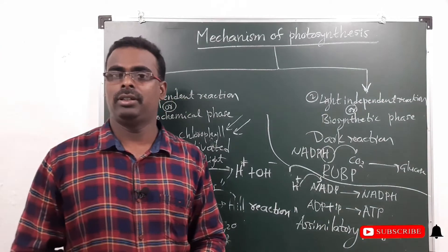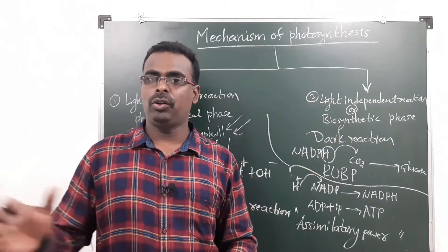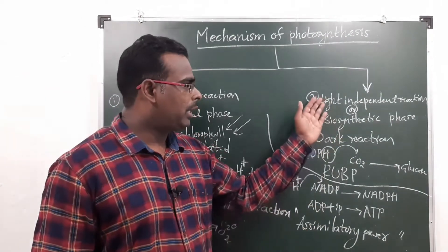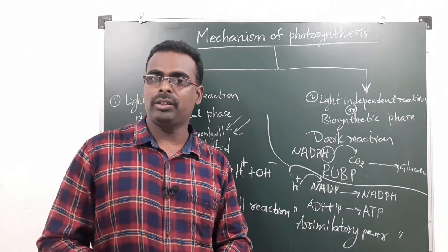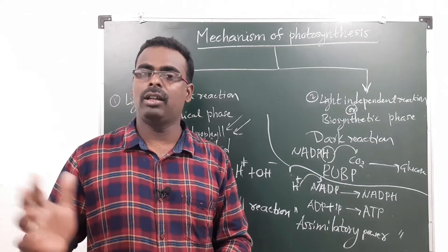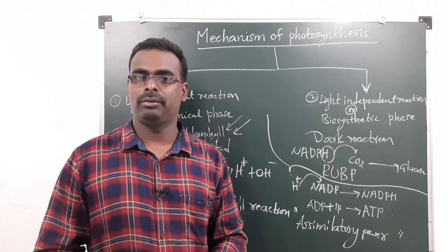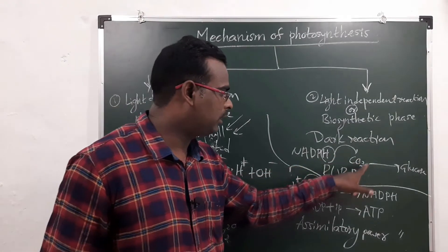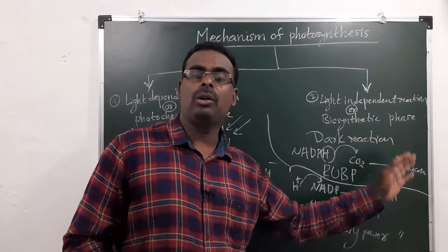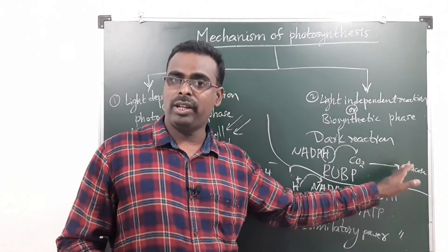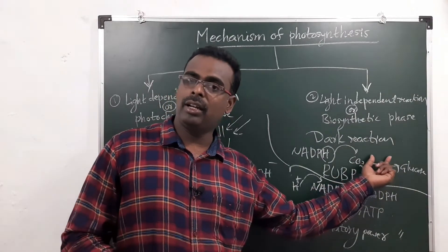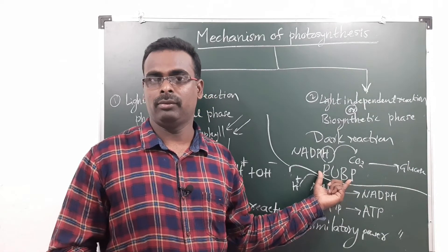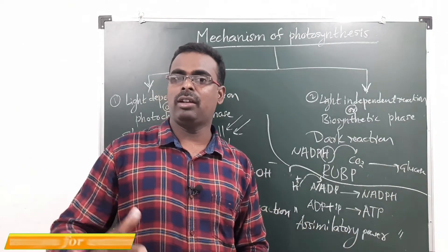In the light independent reaction, some reactions do not require light, so they are called light independent or dark reaction. The hydrogen from NADPH is used to convert carbon dioxide into glucose. Carbon dioxide undergoes many changes involving intermediary compounds, one of which is RuBP — ribulose 1,5-bisphosphate. Finally, glucose is formed, and then glucose converts into starch.